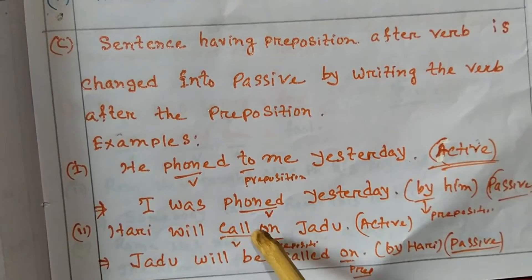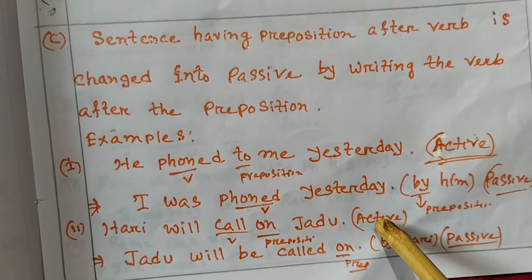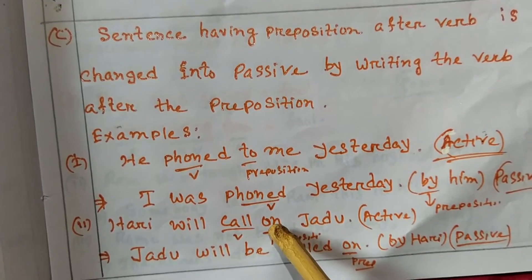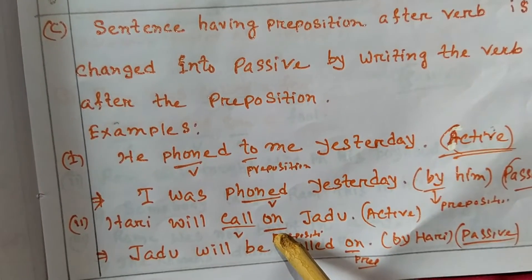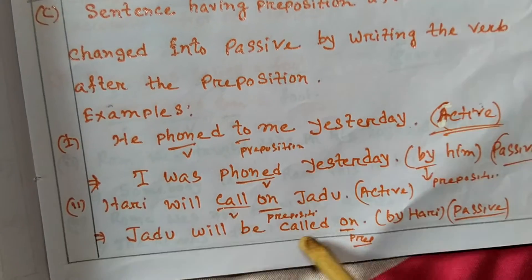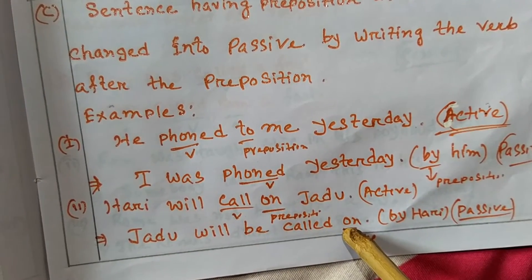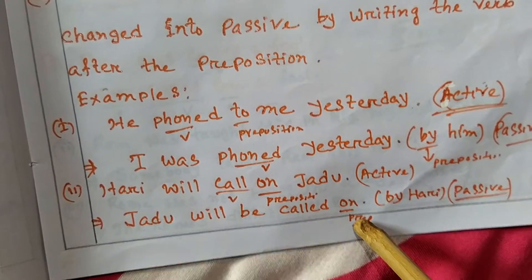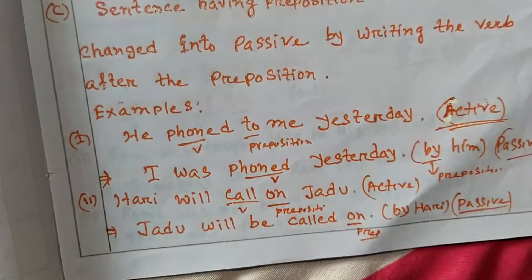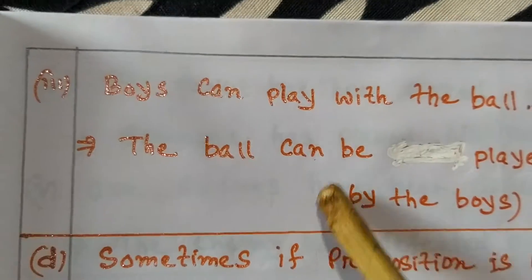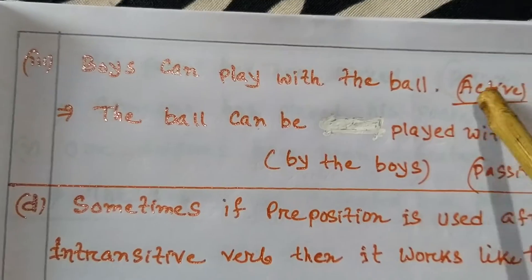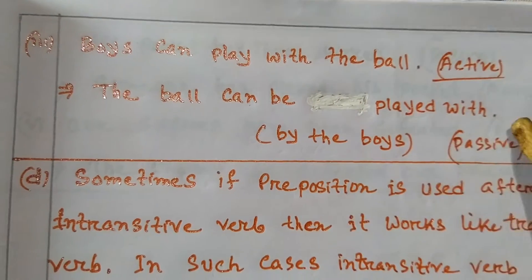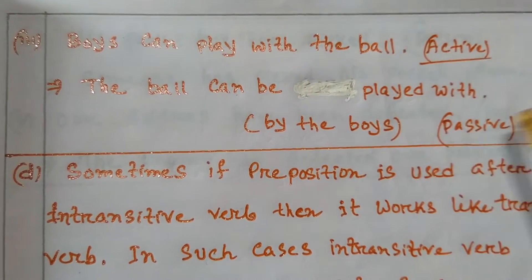Number 2: 'Hari will call on Jadu' — active voice. 'Call' is the verb and 'on' is the preposition. Passive voice: 'Jadu will be called on by Hari.' Number 3: 'Boys can play with the ball' — active voice. Passive voice: 'The ball can be played with by the boys.'